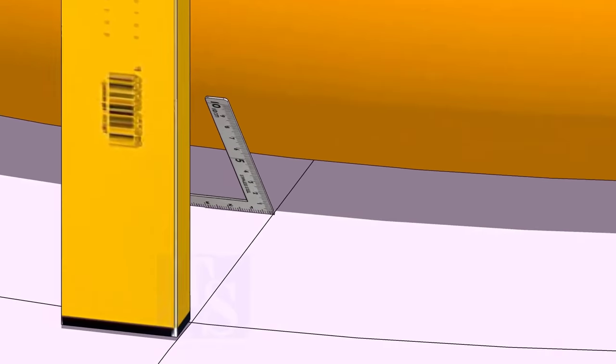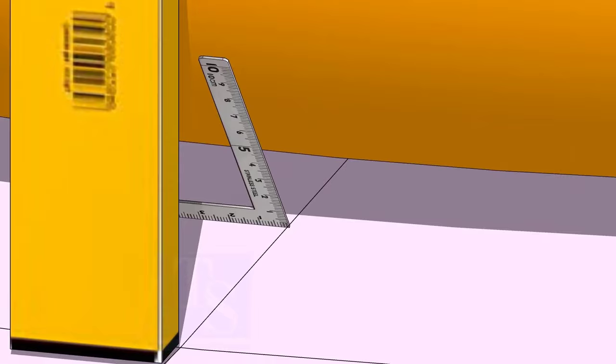At the bottom side, use a small right angle and transfer the line to the elbow on both sides.